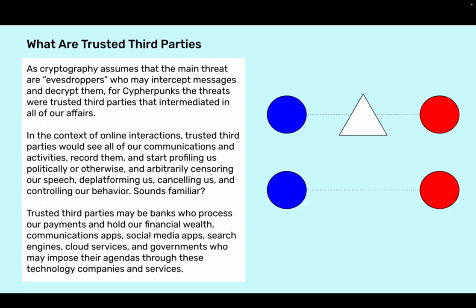What are trusted third parties? As cryptography assumes that the main threat are eavesdroppers who may intercept messages and decrypt them, for cypherpunks the threats were trusted third parties that intermediated in all of our affairs. In the context of online interactions, trusted third parties would see all of our communications and activities, record them, and start profiling us politically or otherwise, and arbitrarily censoring our speech, deplatforming us, canceling us, and controlling our behavior.